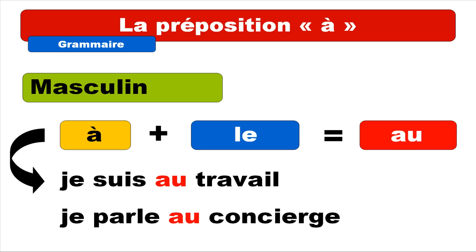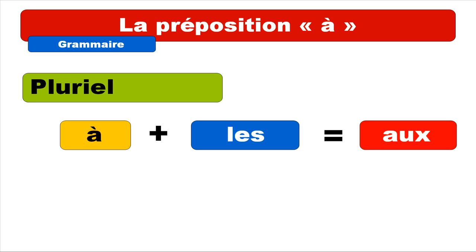So remember that A plus LE égale AU. So AU is the preposition you should use in this case for the masculine. And then the plural form — it's the same way as the masculine, so it does change. So if you combine A plus LES, then you will get AUX. As usual, the final X is not pronounced. It can be pronounced if the following word starts with a voyelle, or H plus une voyelle, in which case you will have to make the liaison.